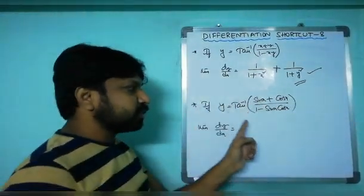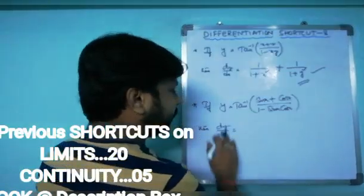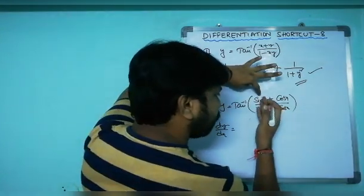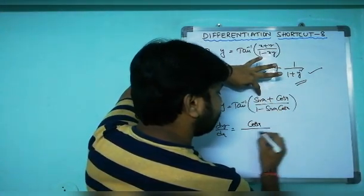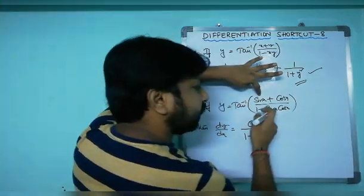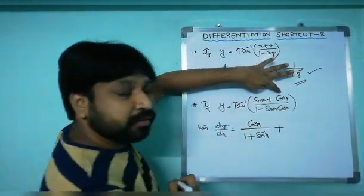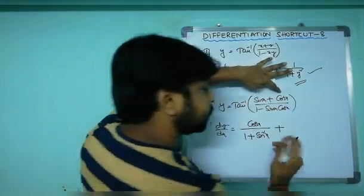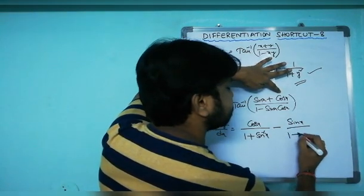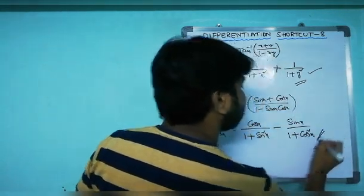Next example: if y equals tan⁻¹((sin x plus cos x)/(1 minus sin x · cos x)), then dy/dx equals: f(x) is sin x, so f′(x) is cos x, giving cos x/(1 plus sin²x). Since there's a plus sign in the numerator, keep it positive. For f(y) equals cos x, the derivative is minus sin x, so plus becomes minus: minus sin x/(1 plus cos²x).